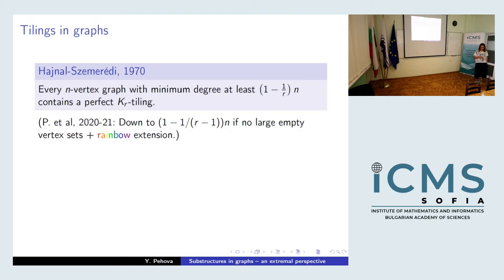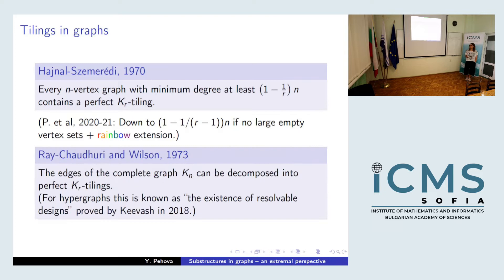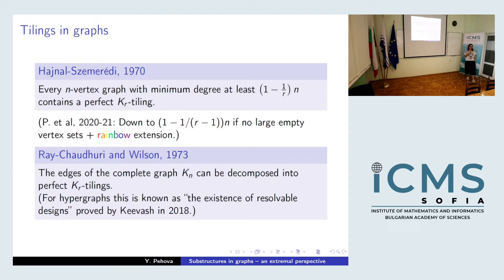What about finding dense collections of tilings in the complete graph? That was also known since the 1970s — Ray-Chaudhuri and Wilson showed the complete graph on n vertices can be perfectly decomposed into perfect tilings with K_r. An extension of this for hypergraphs was a big deal and a big conjecture in combinatorics, known as the existence of resolvable designs. It was only proved by Keevash in 2018 — a very complicated paper. He submitted it to the Annals, and they sent it back because it was too complicated for anyone to understand.